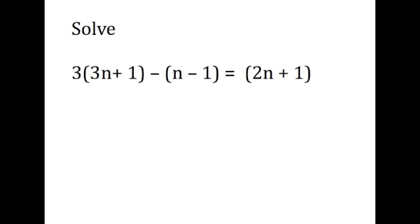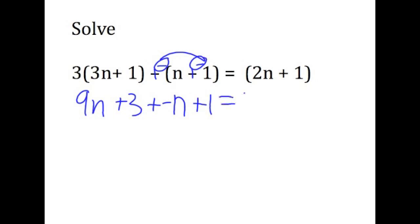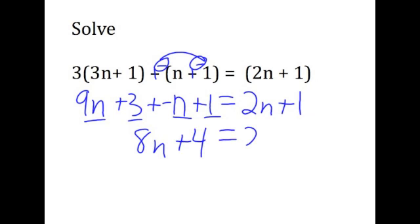On our third problem, we have 3 times 3 is 9n, 3 times 1 is 3. I call this running a negative through, and it makes the opposite of n and a positive 1, because this negative and this negative make positive 1. The other side, there's not much to do with it. Now we're going to combine the like terms on this side and this side, and that's going to give us 8n plus 4 equals 2n plus 1.